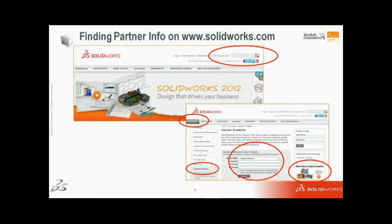Where do you find information about SOLIDWORKS partners? If you know the name of the partner or product, you can go directly to our website and type it into the search panel — all information and case studies about that partner will come up. For a more detailed search, go to our partner products page and use various keywords. Also, don't forget to check our partner quick flicks — short videos showing all our partner products working with SOLIDWORKS.